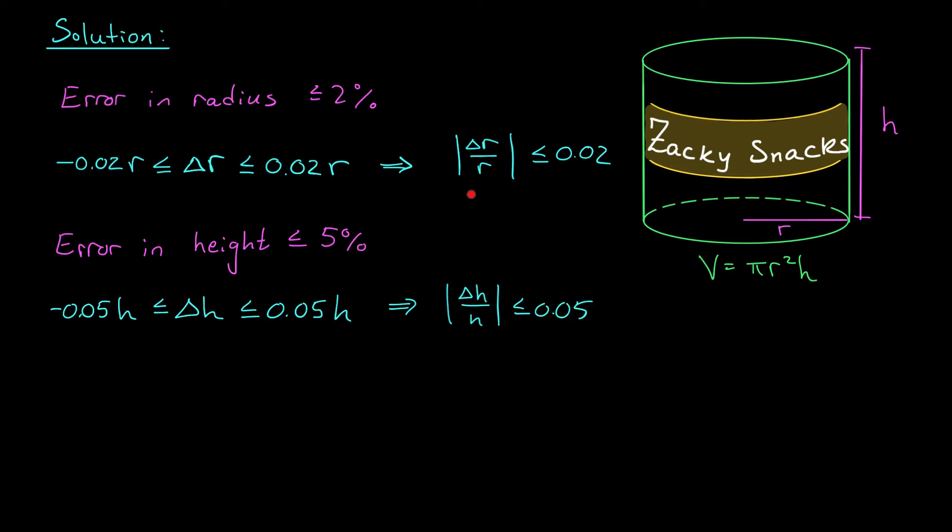Okay, fantastic. We've written down the information given to us in the problem, and now we need to figure out what exactly needs to be shown in our solution. In this problem, we're being asked to say something about the greatest possible percentage error in the calculation of this can's volume. The greatest possible percentage error in the radius is shown here, and the greatest possible percentage error in the height is shown here. We'd now like to establish a similar inequality using the volume of the can, V. Specifically, we're looking for an approximate upper bound on the absolute value of the percent error, delta V over V. How might we do this?